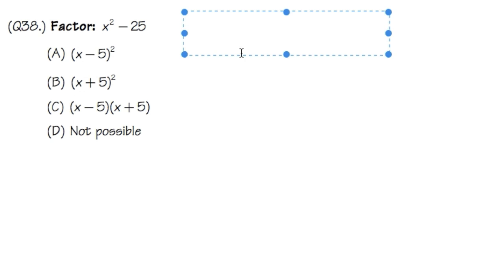To do this, we are going to use a factoring formula, and that's the difference of 2 squares. a squared minus b squared will give us a minus b times a plus b.